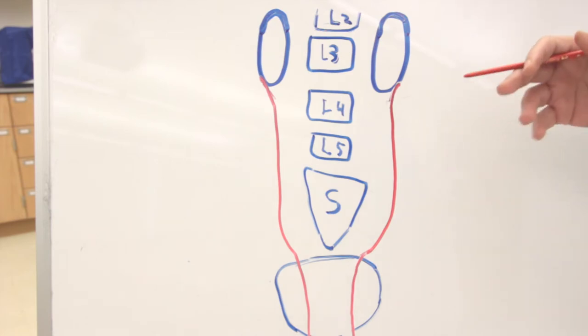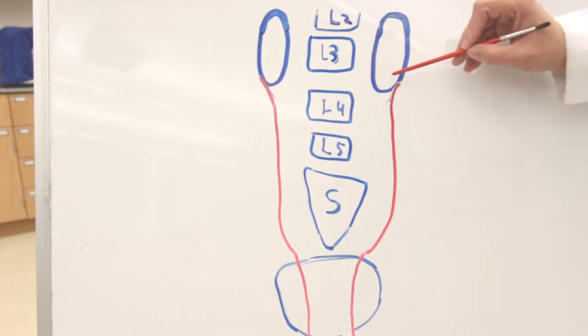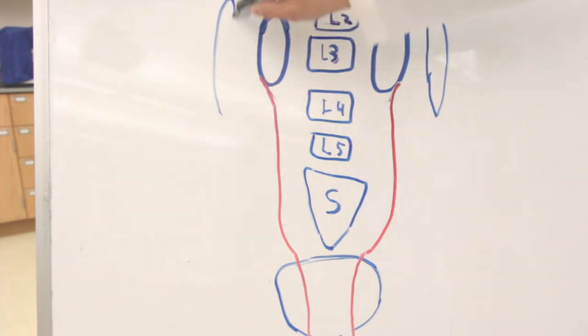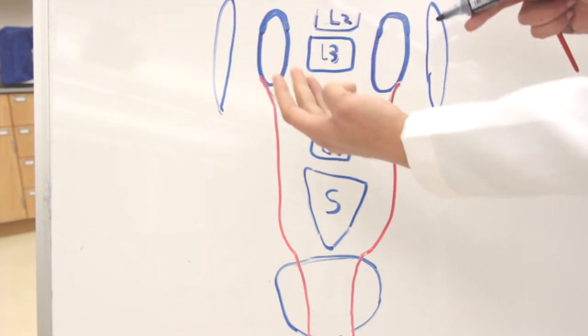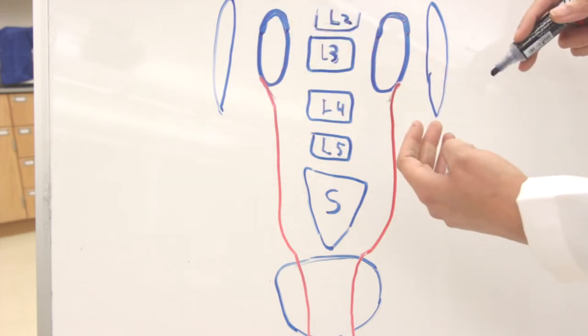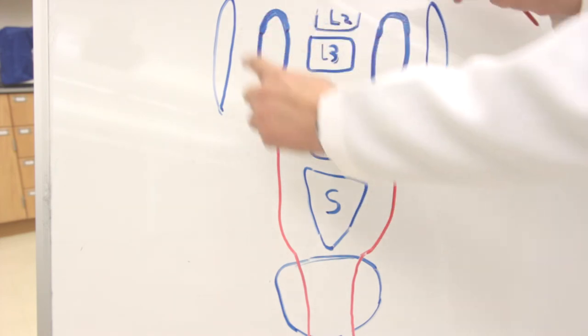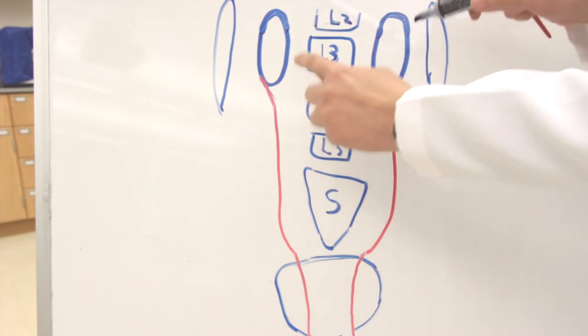But for that, we have to understand that the testes actually develop in the lumbar region of the abdominal cavity. They are developing along with the kidneys here in this region, and medial to the kidneys, the gonads will be developing. Today we are going to talk about the testes only, which are the male gonads. So they are developing in the lumbar region, but they cannot stay in the lumbar region.